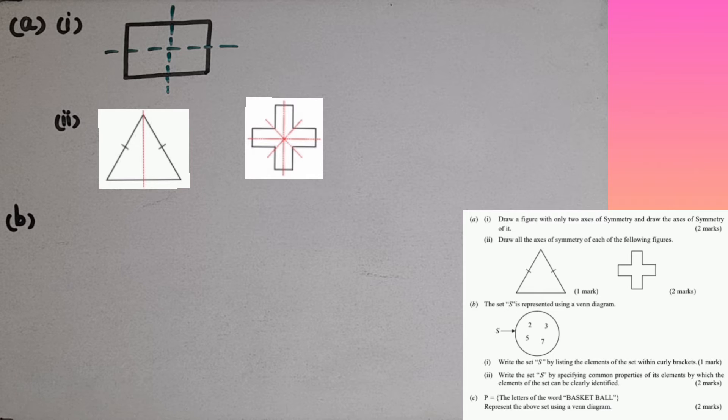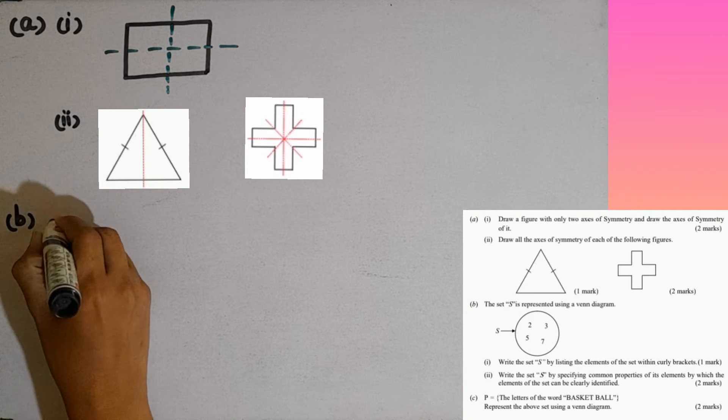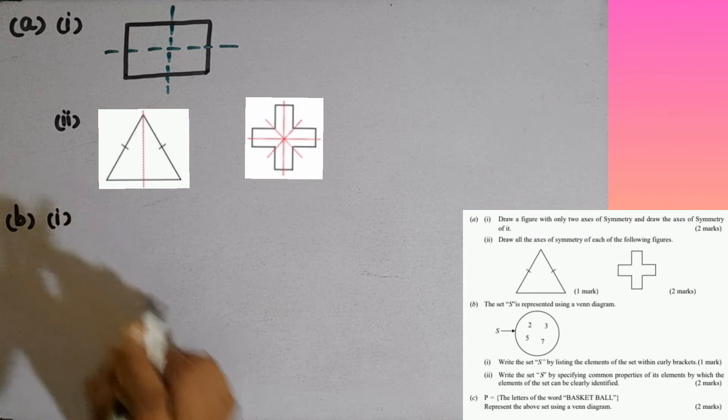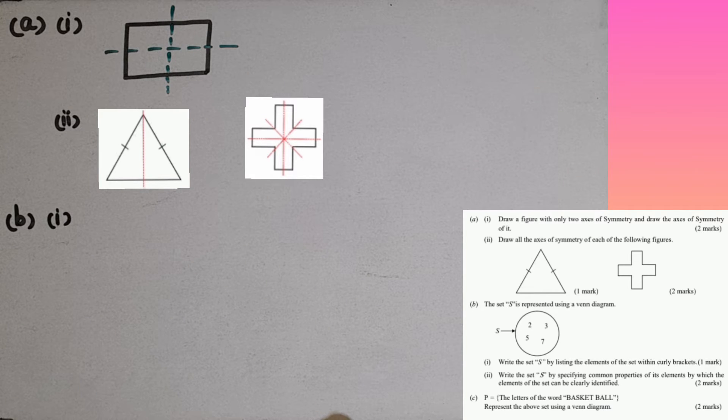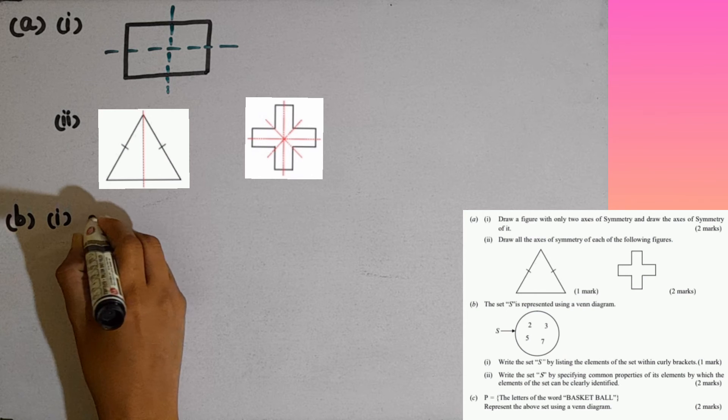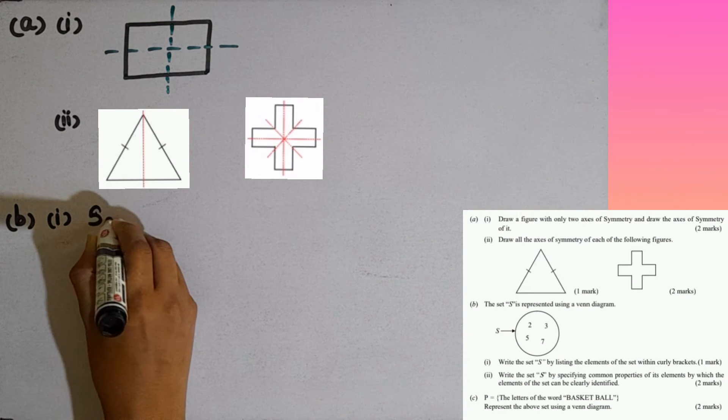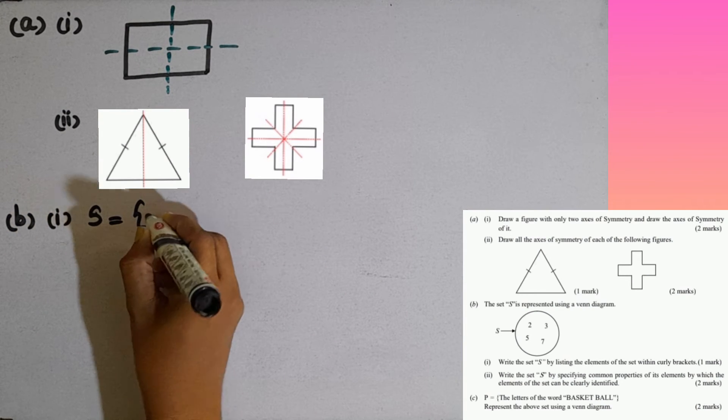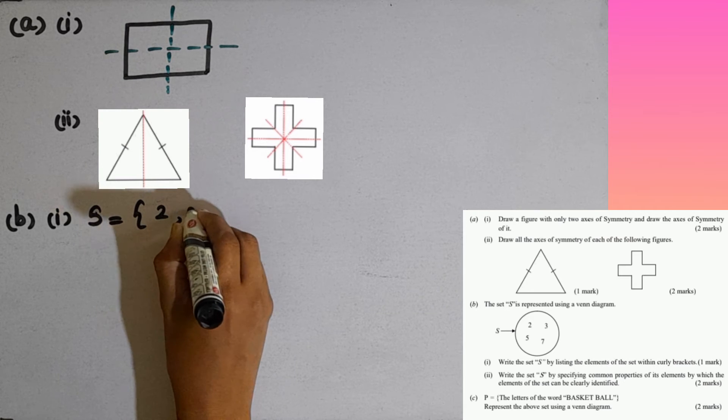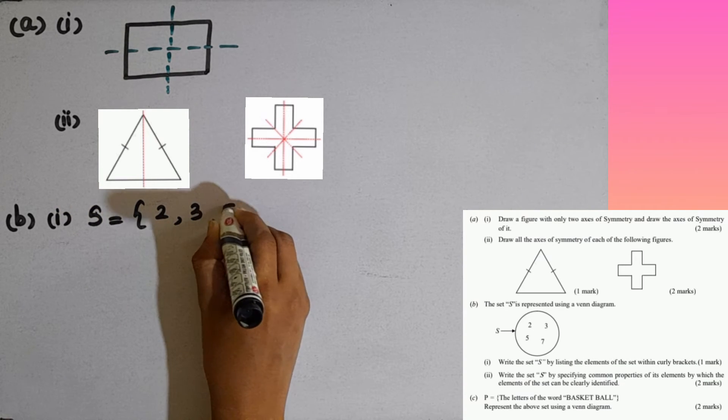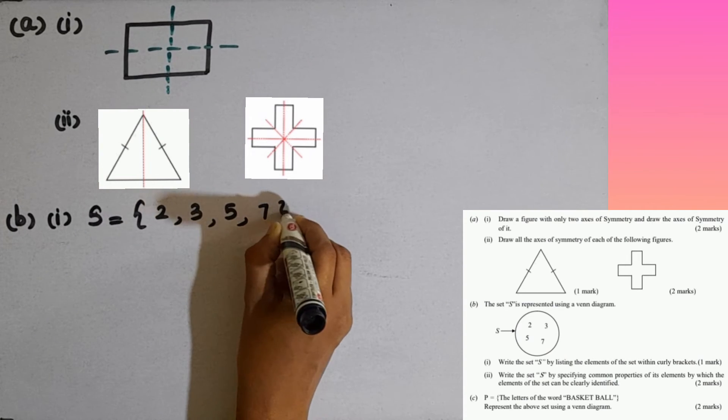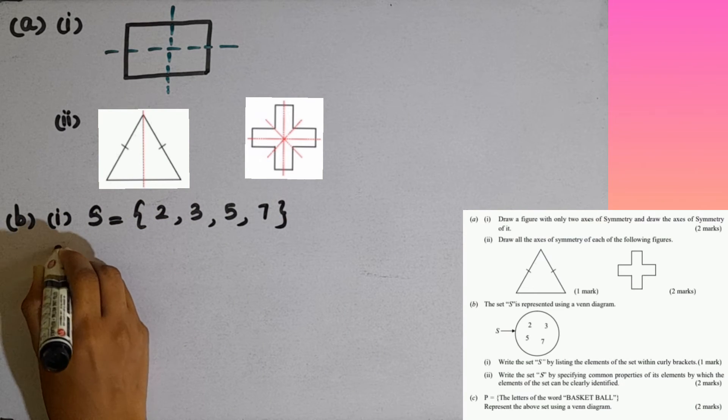The set S is represented using a Venn diagram. This is the Venn diagram given for us. So first part, first question. Write the set S by listing the elements of the set within curly brackets. 2, 3, 5, 7. This is the Venn diagram. Then second question.